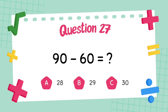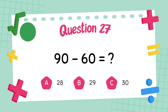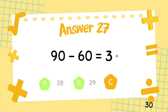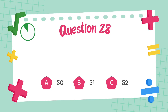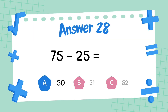What is 90 minus 60? The answer is 30. What is 75 minus 25? The answer is 50.